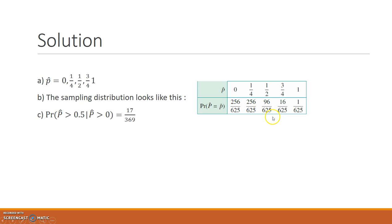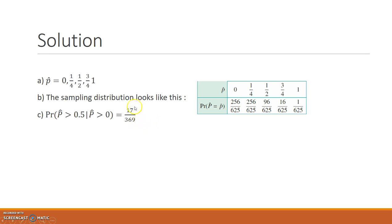Using the sampling distribution, you needed to find the probability that P-hat was greater than 0.5, given that it was greater than 0. The final answer is 17/369. If you have a decimal value, please make sure it coincides with this exact value.